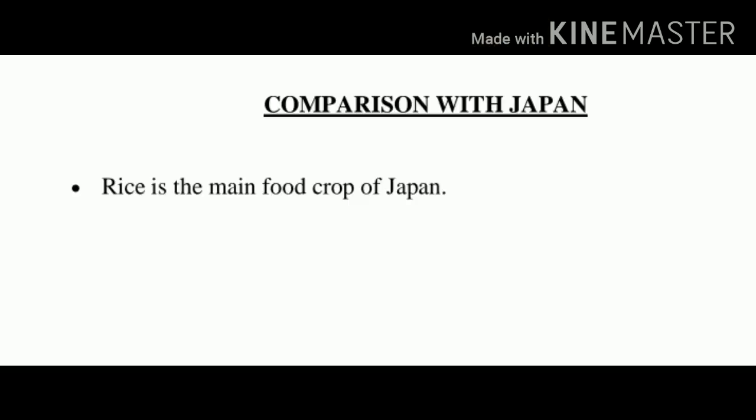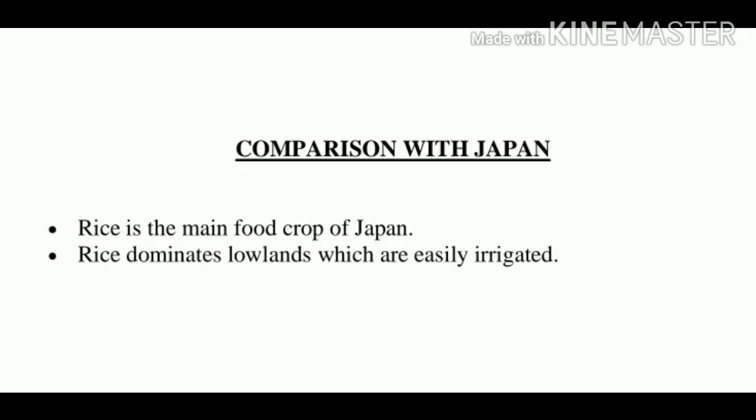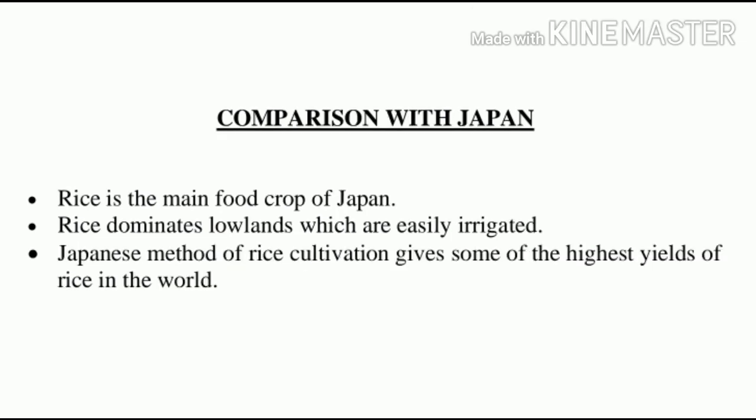Comparing with Japan, rice is the main food crop of Japan and is the staple food of the Japanese. This crop dominates lowlands which are easily irrigated. Japanese methods of rice cultivation give some of the highest yields of rice in the world. Rice is first prepared as nursery in the seed beds and transplanted in late spring to the flooded fields.